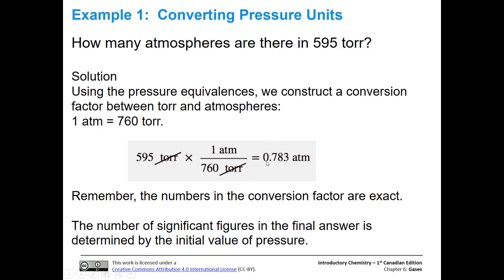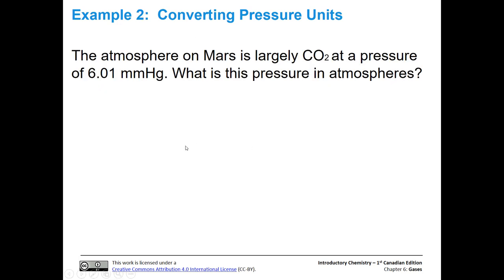Remember, this zero before the decimal place, that leading zero, does not count in the count of sig figs. Okay, so let's do another one. The atmosphere on Mars is largely carbon dioxide at a pressure of 6.01 millimeters of mercury. What is this pressure in atmospheres? Go ahead and try this one, and then we'll talk about it.